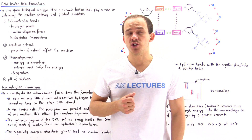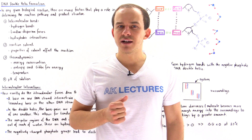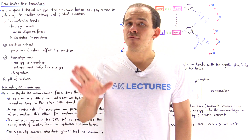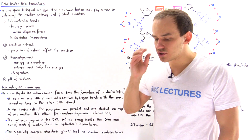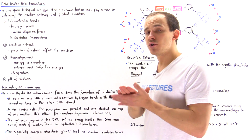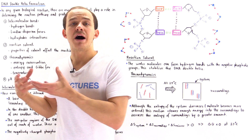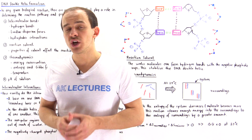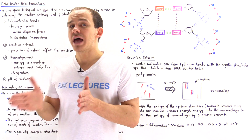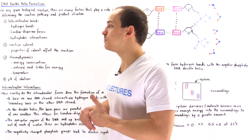In your study of biochemistry, you're going to come across many different types of biological reactions that take place inside our body and inside our cells. For every one of these biological reactions, in order to determine what the pathway of the reaction is and what the final structure of the final biomolecule is in that particular process, we have to consider the many different types of factors that can influence the reaction pathway and the structure of that final product molecule.